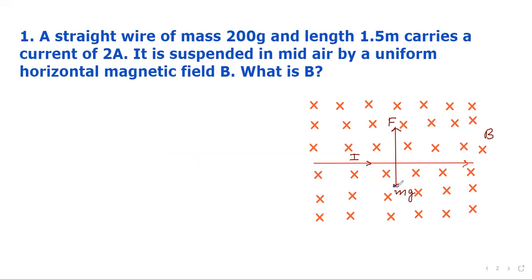The weight of the wire will act downward and the force on wire will act upward. The two will be equal. Only then, the wire will remain suspended in air. So, we can say that B I L sin theta must be equal to m g, the weight of the wire. Here theta will be 90 degrees because the magnetic field is perpendicular.